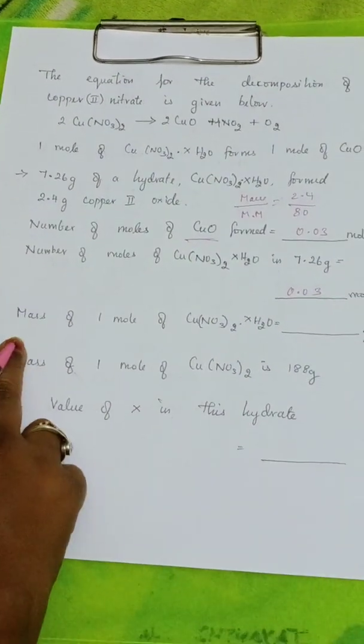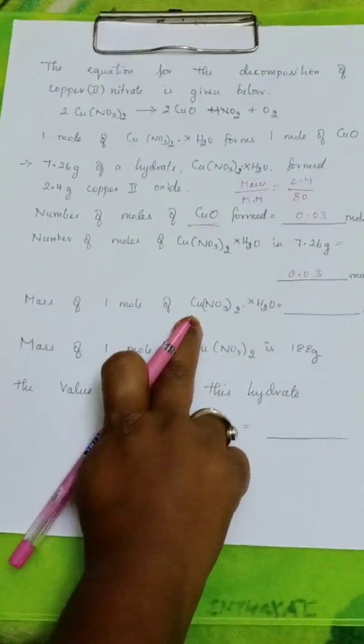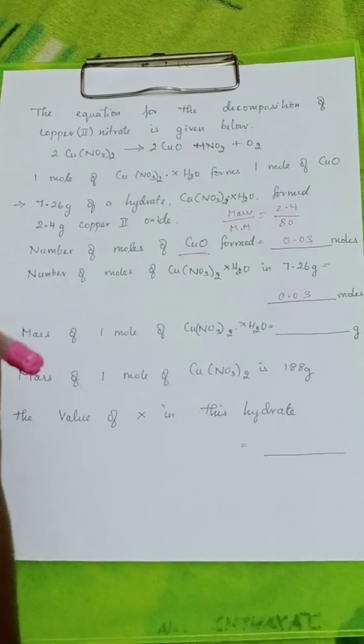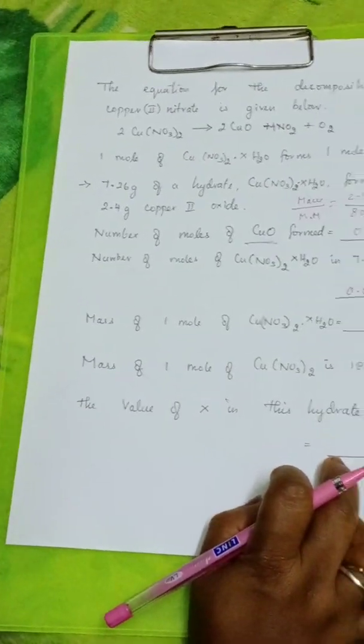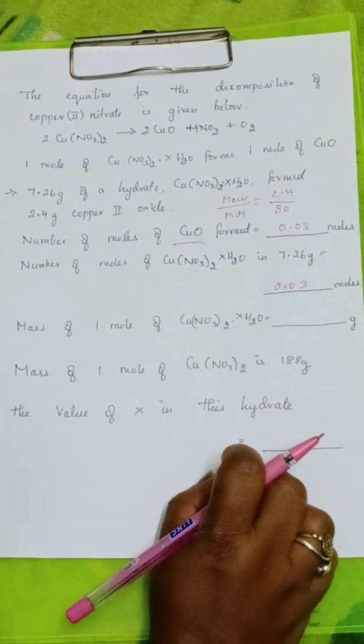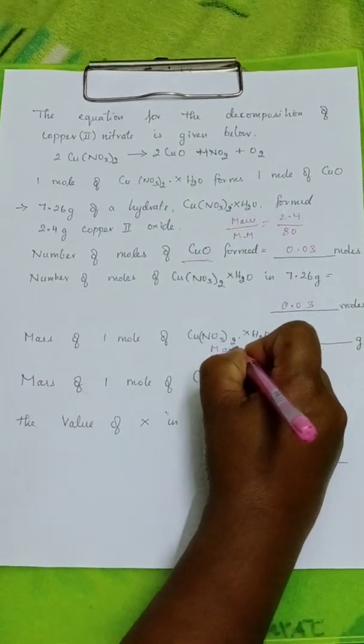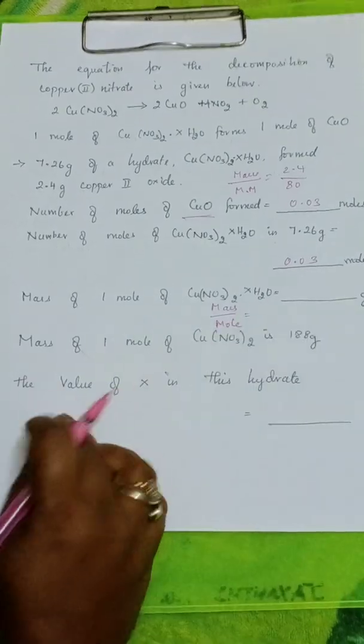1 is to 1. Now, mass of 1 mole of copper nitrate, hydrated copper nitrate, we have to calculate. So, how will you find the mass here? Mass by mole. That is the formula.